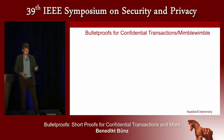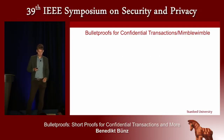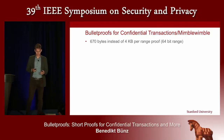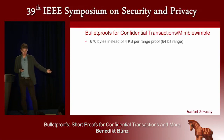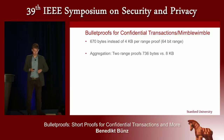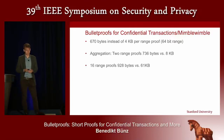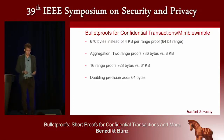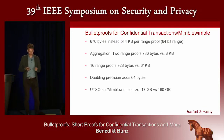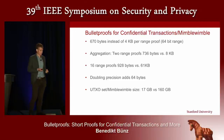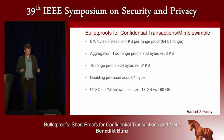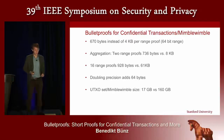The overall evaluation for confidential transactions — our main application — is that we have 670-byte range proofs instead of four kilobytes previously. For 16 range proofs, we're still under a kilobyte versus 61 kilobytes for the previous system. Doubling the precision only adds 64 bytes. Overall, if we look at the current UTXO set and assume no change in user behavior in Bitcoin, this would shrink the UTXO set size by about a factor of 10 compared to using the old range proof.